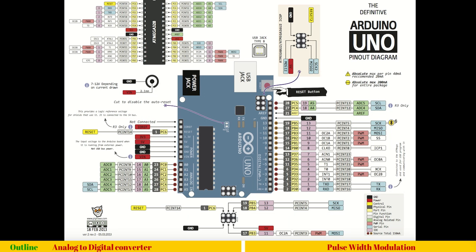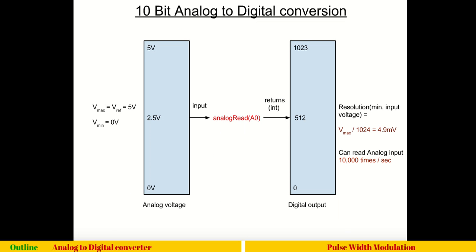Getting back to our diagram, VMIN is zero volts — so the minimum voltage the ADC can take is zero volts. The only function which reads the analog signal is analogRead. You know the four magic functions: digitalRead, digitalWrite, analogRead, and analogWrite. analogRead is the ADC, and analogWrite is PWM. On a scale from 0 to 5 volts, a signal of 0 volts will correspond to a digital value of 0.